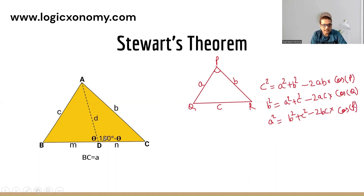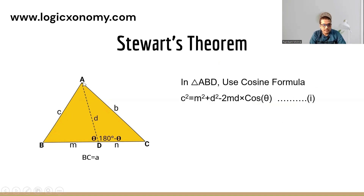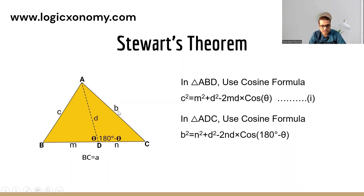We are going to apply this cosine formula in triangle ABD. In triangle ABD: c² = m² + d² − 2md·cos θ. Similarly, applying the same formula in triangle ADC: b² = d² + n² − 2nd·cos(180 − θ).